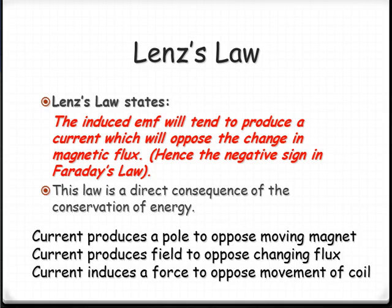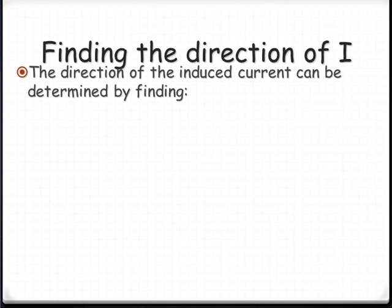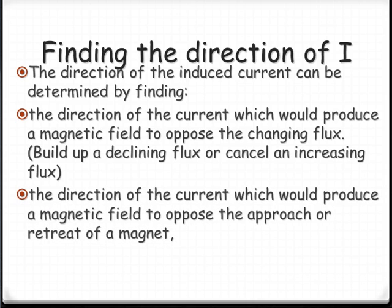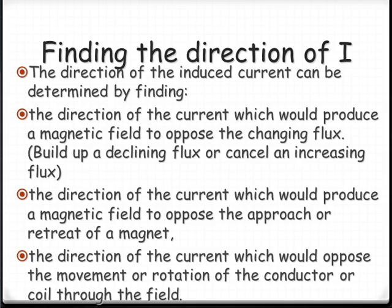So, how do we actually work out the direction in terms of or given a diagram how could we work out the direction of the induced EMF? We've got really three different things that we can do. First thing, the direction of the current will produce a magnetic field to oppose the change in flux. So, if the flux is declining it's going to try and induce one to build that up or if it's increasing the flux the magnet is coming in it's going to produce a field that would oppose it. We're going to use the right hand grip rule to determine the direction. The direction of the current will produce a field that's going to oppose the approach or the retreat of the magnet. So, if the magnet is coming in it's going to produce a magnetic field that would repel it. If you take the magnet away it produces a field that will attract it. Or the direction of the current will oppose the movement of the conductor or the coil through the field. And that one's probably the hardest of the lot and we'll look at that more in terms of generators.